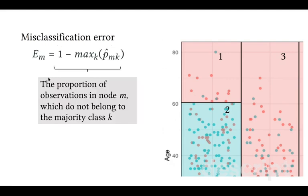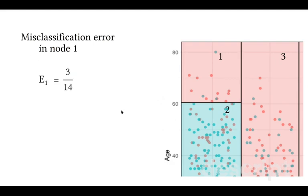So misclassification error is the proportion of observations in node m which do not belong to the majority class. In our example, misclassification error would be 3 over 14 because we will classify everyone who falls into this region as not survived or died. And only 3 out of 14 we misclassified as dying whereas in fact they survived.